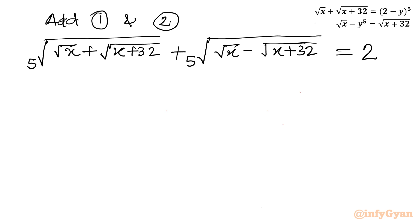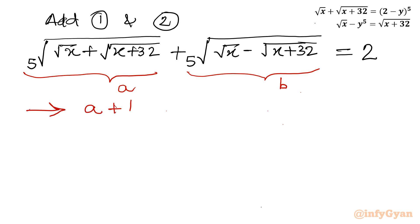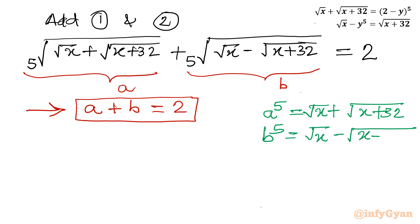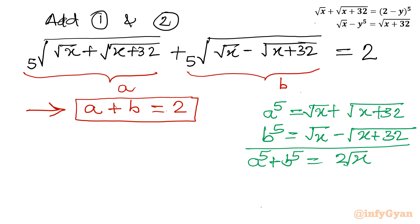Now we will find the value of x. Let us consider the first fifth root as 'a' and the second fifth root as 'b'. From the addition, we get equation: a plus b equal to 2. From the substitution, a power 5 equals square root x plus square root of x plus 32, and b power 5 equals square root x minus square root of x plus 32. Adding these: a power 5 plus b power 5 equals 2 square root x. This is a very important equation we will use.